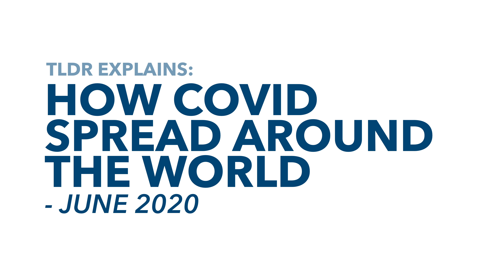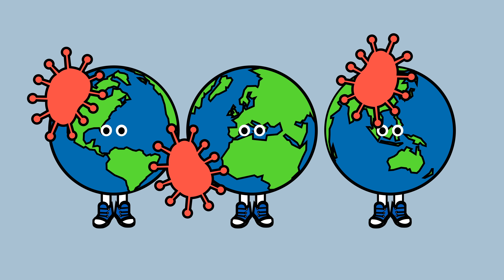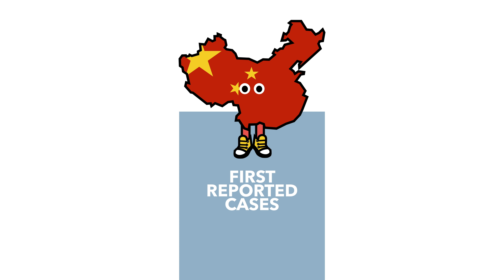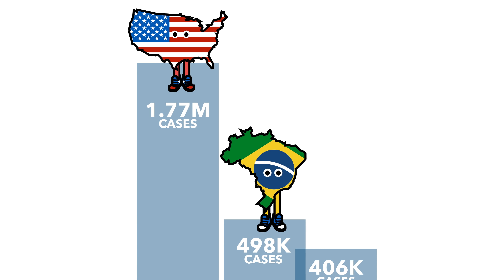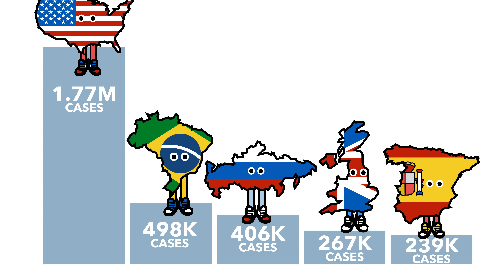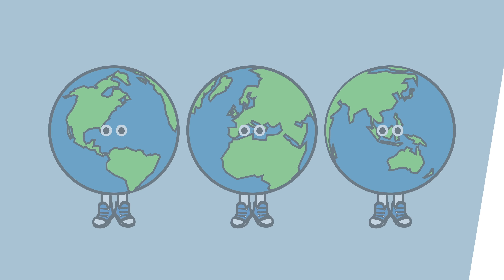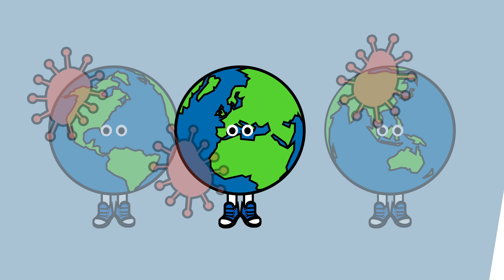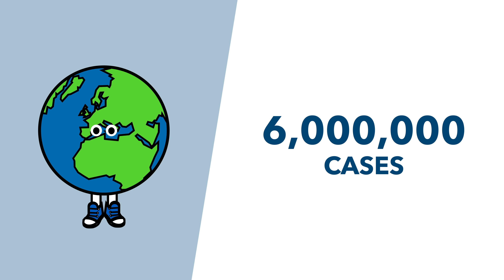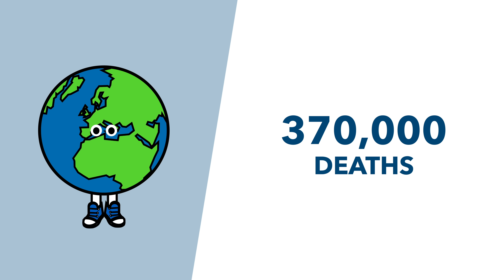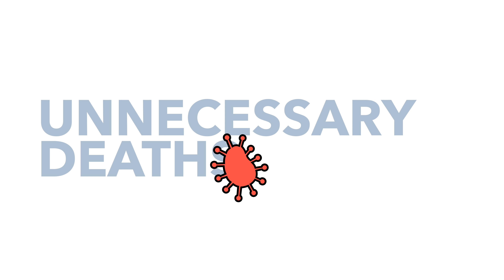For months now, we've been tracking the spread of COVID-19 from its first emergence in Wuhan, China, all the way through to today, where countries like the US, Brazil, Russia, the United Kingdom and Spain seem to be the most impacted by the virus so far. And as the virus spreads, we continue to see the impact it leaves in its wake, currently in excess of 6 million confirmed cases and 370,000 deaths, not even including those other unnecessary deaths that the virus has caused.